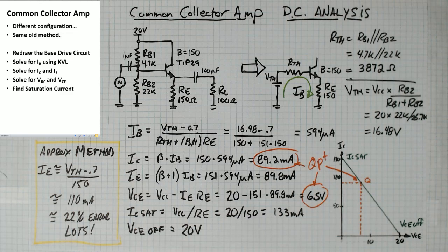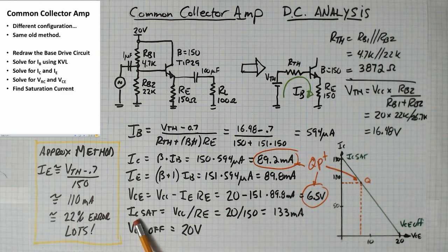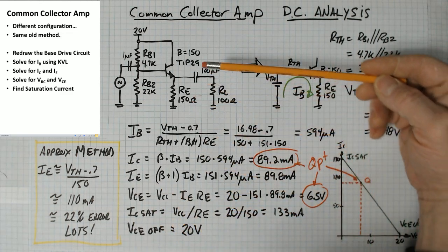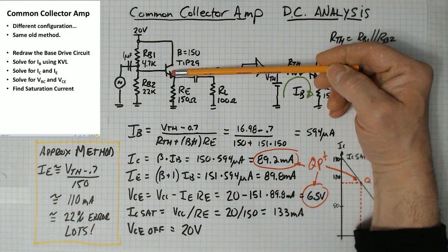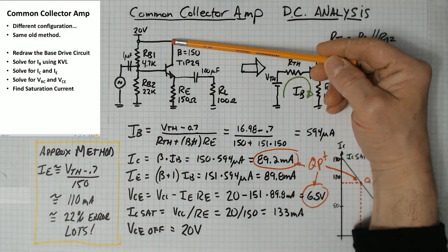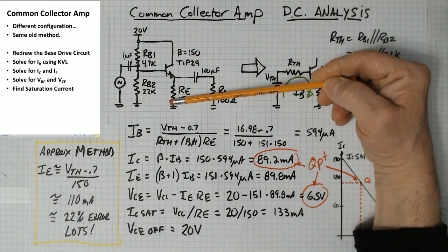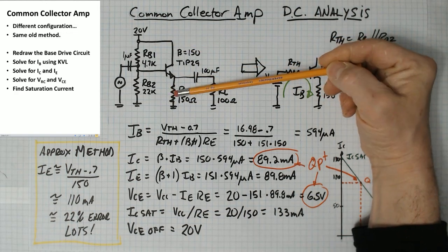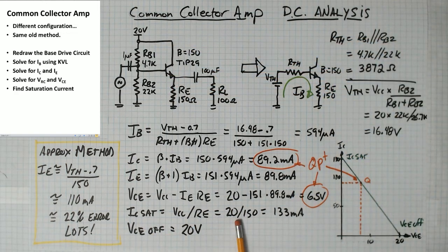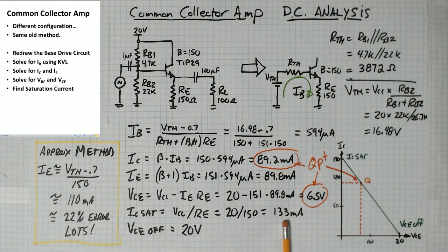Now we're finding the saturation current, IC sat. Again, the method is the same. You consider this transistor to be shorted. And you figure out how much current would be going through it if it was a short, which would be 20 volts over 150. So 20 volts over 150 is 133 milliamps.